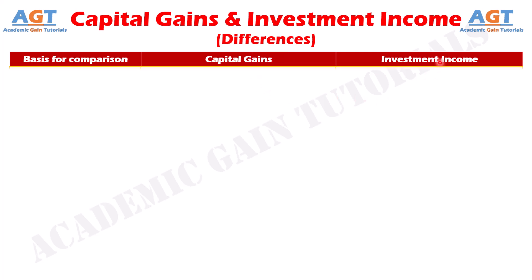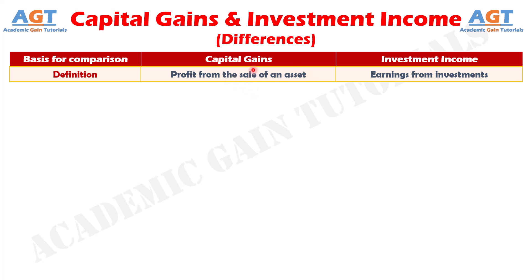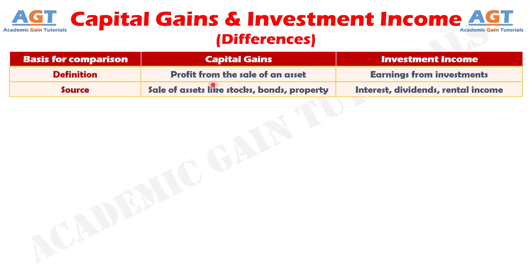Difference number one: capital gains refer to the profit from the sale of an asset, whereas investment income refers to the earnings from investments. Number two: capital gains arise from the sale of assets like stocks, bonds, or property, whereas investment income comes from interest, dividends, and rental income.